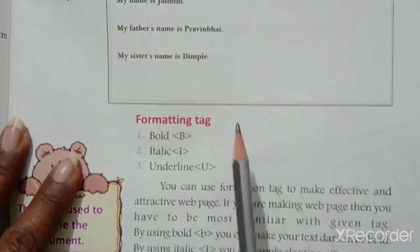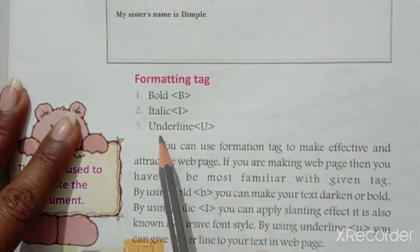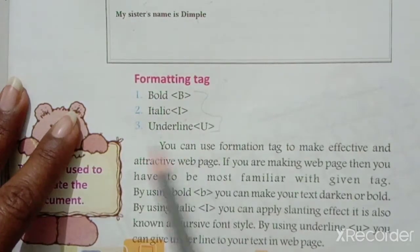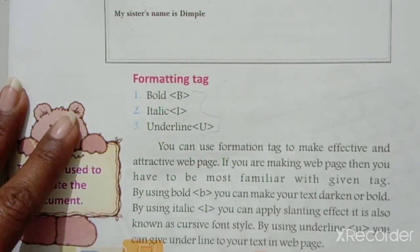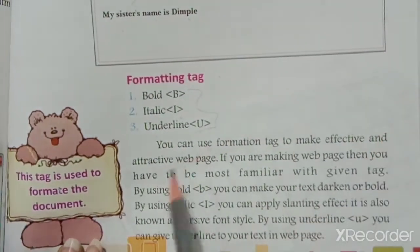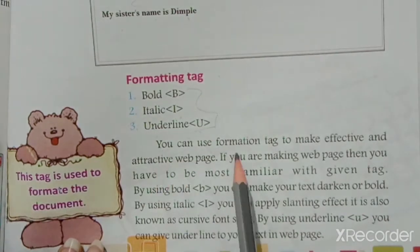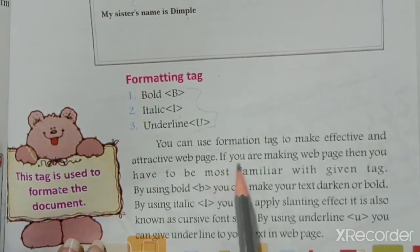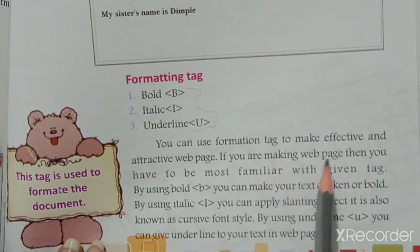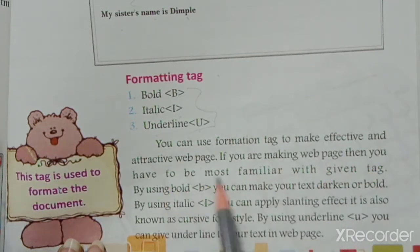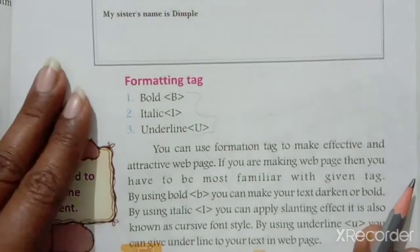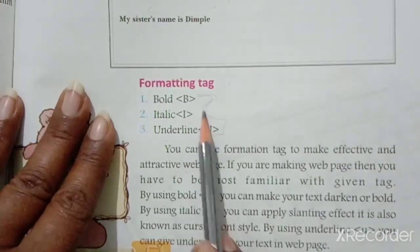Then formatting tags: Bold B, Italic I, Underline U. If we use these, they will show the effect in our sentence. You can use formatting tags to make an effective and attractive web page. If you are making a web page, you have to be most familiar with these given tags.